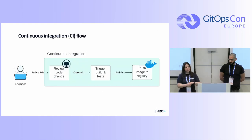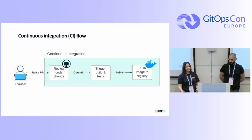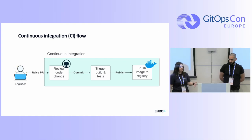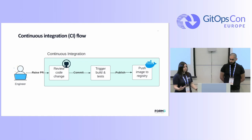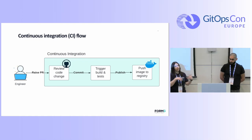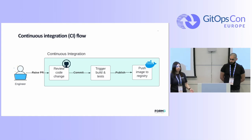This talk is more about what happens after the CI flow. Our CI flow is standard: engineers raise PRs, we have code review, and at the very end CI triggers the build and testing. At the end, we have a new image that's pushed to the registry.